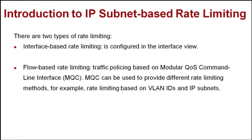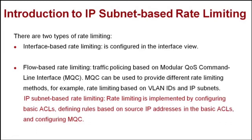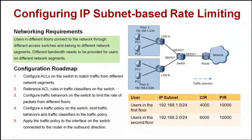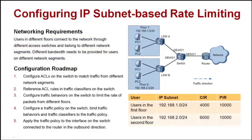Now let's see IP subnet based rate limiting. It is implemented by configuring basic ACLs, defining rules based on source IP addresses in the basic ACLs, and configuring MQC. As shown in the figure, users in different floors connect to the network through different access switches and belong to different network segments. Users in the first floor belong to network segment 192.168.1.0, and users in the second floor belong to network segment 192.168.2.0. Different bandwidth needs to be provided for users on different network segments. To meet the requirements, configure IP subnet based rate limiting.